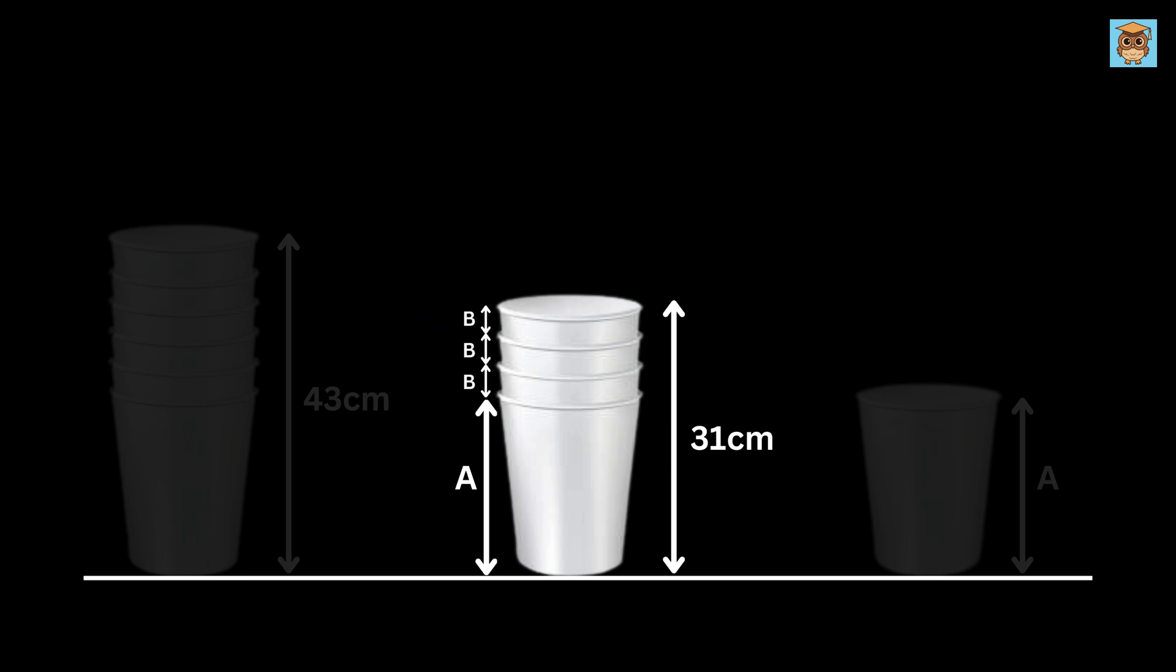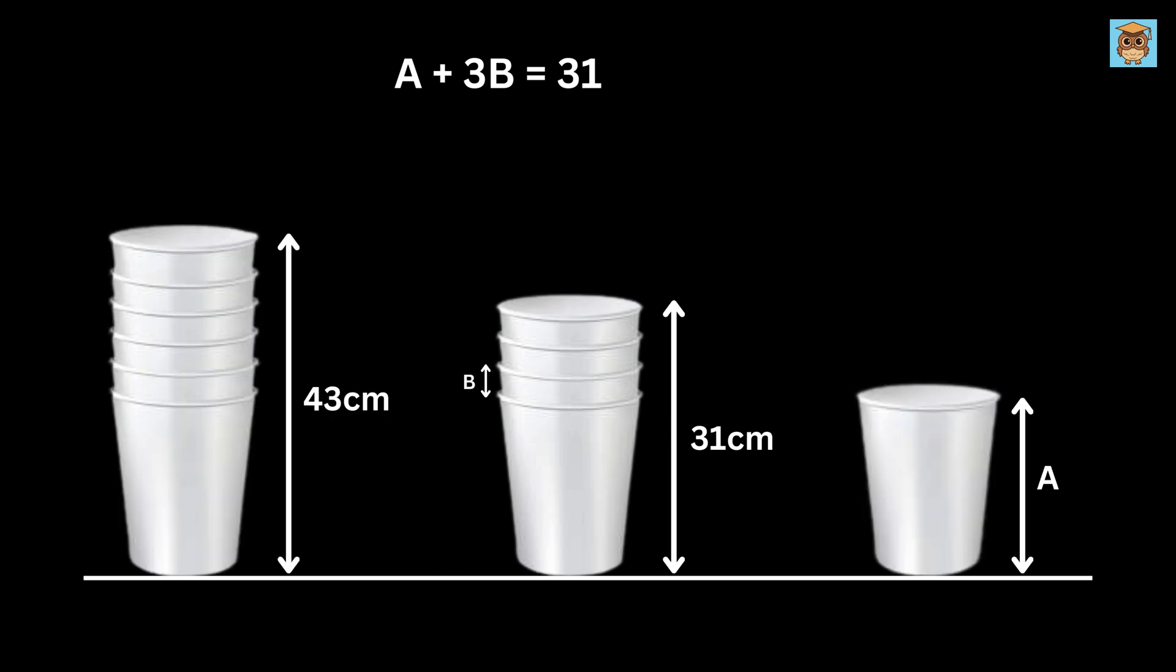So we have the height of this entire part as A plus three times B, but it is equal to 31, right? So we get A plus three times B equals 31. Nice.